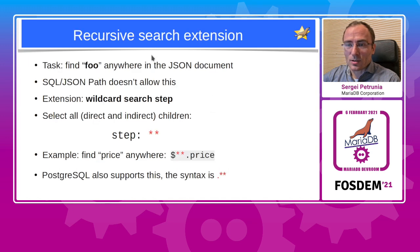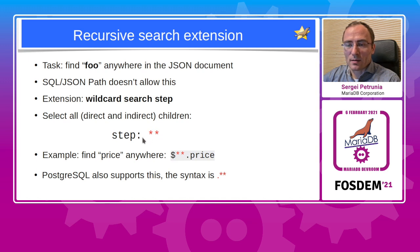There is, however, an extension supported: recursive search. Suppose we have a task to find a certain member anywhere in a JSON document. With SQL JSON path that's not possible — you need to specify the full path. So both MariaDB and MySQL support a wildcard search step extension: if you use double star, it will select all direct and indirect children of the current element. Then you can add another step to select a member or array element. This way you can find, for example, an element named 'price' anywhere in the JSON document. PostgreSQL also supports this extension, but their syntax is .** — different syntax, same semantics.